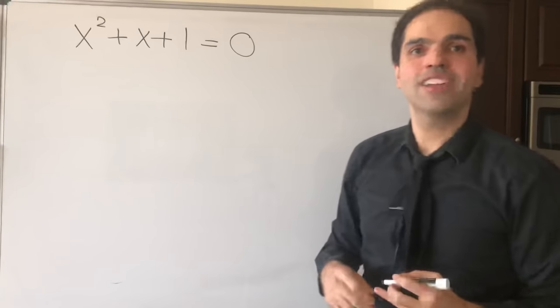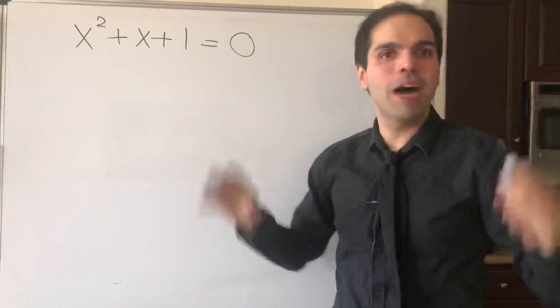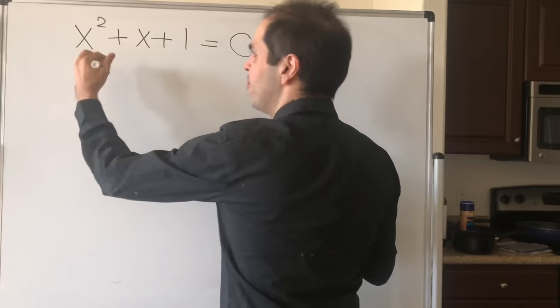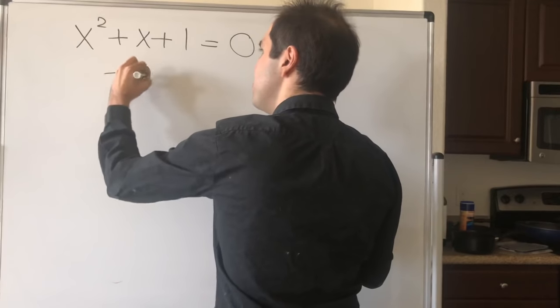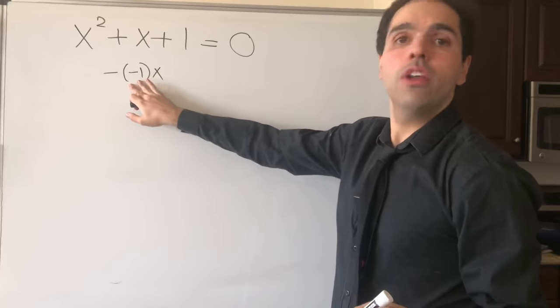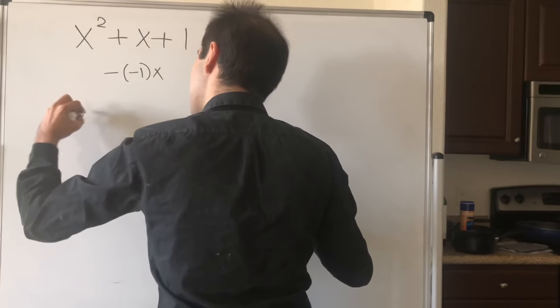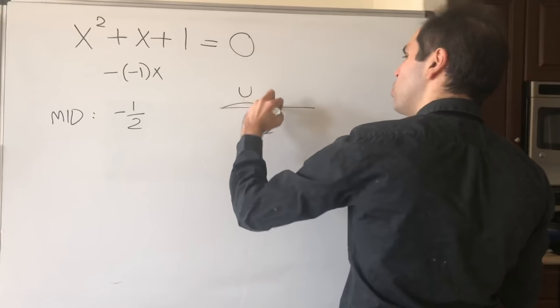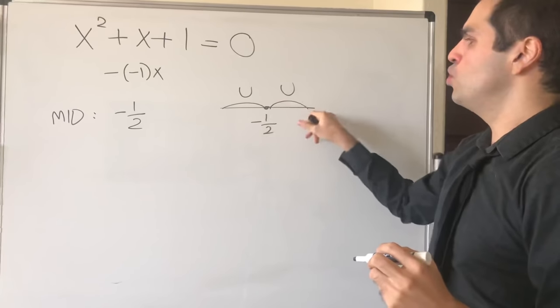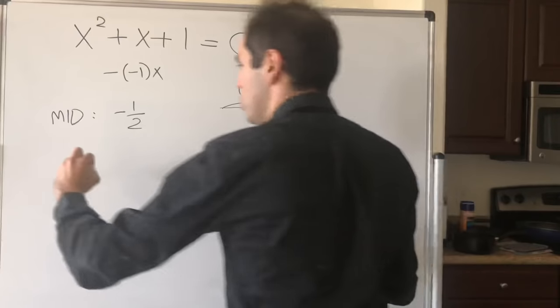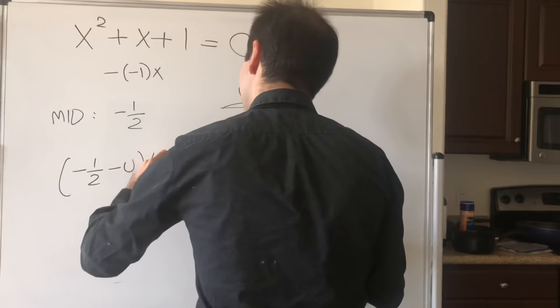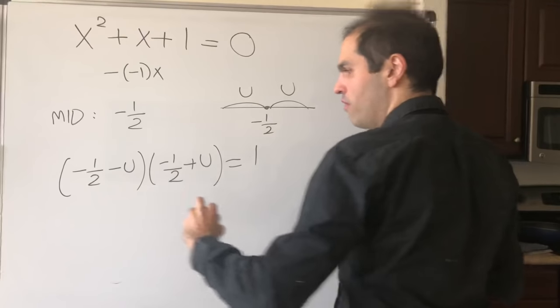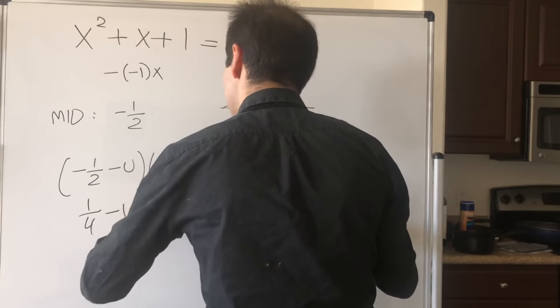And now let's just do quickly one more complex root just to see again how awesome this is. Okay, so let's find the roots of x² + x + 1 = 0. And I know, blah blah geometric series, but let's just use the Po Shen Lo way. So remember here you need a minus. So it's -(-1)x. The midpoint becomes -1/2. So this is -1/2. One root is -1/2 - u, the other is -1/2 + u, and that equals 1.